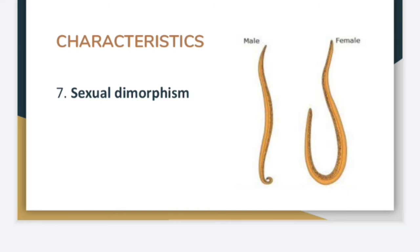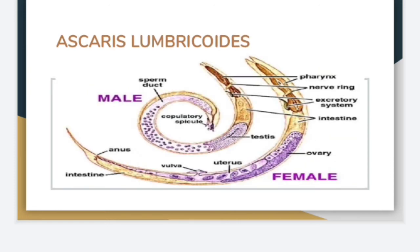Nematodes exhibit sexual dimorphism, meaning the male and female are separate. Now let's discuss Ascaris lumbricoides — how the male and female look externally. The male is smaller compared to the female; both have a cylindrical body, and the posterior end of the male is bent.